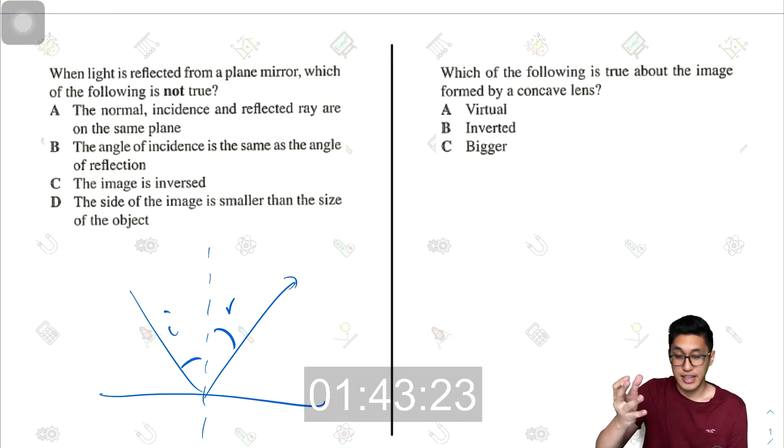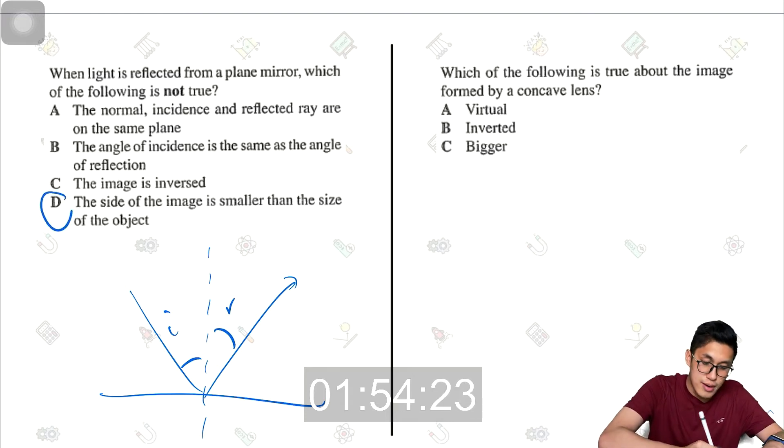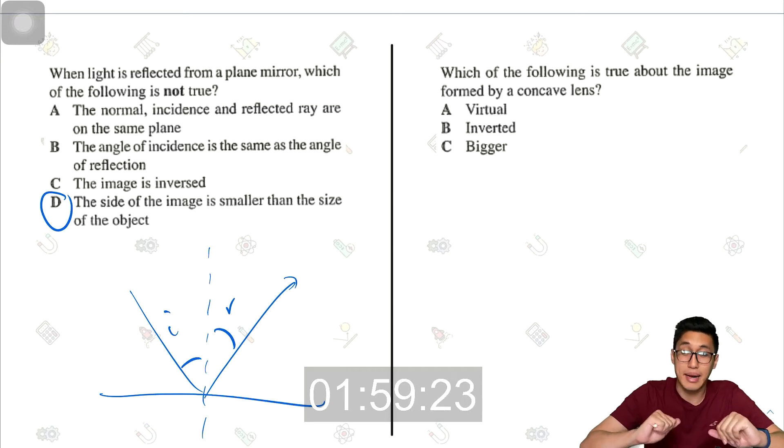The image is inverted, which is true. It is laterally inverted, meaning the right becomes left and left becomes right. And the side of the image is smaller than the size of the object. This is not true because image size must be exactly the same as the object size when using a plane mirror.